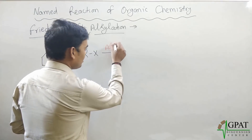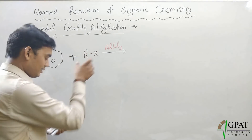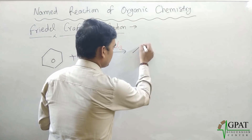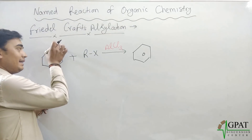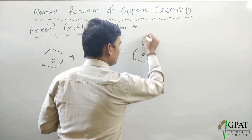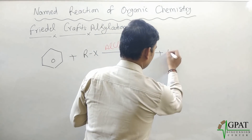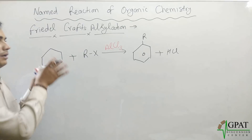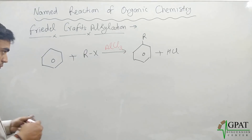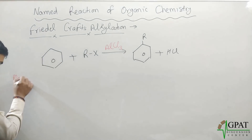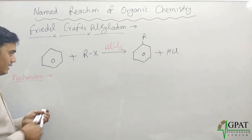I will use aluminium chloride (AlCl₃) as the Lewis acid. By this reaction, the benzene ring gets the alkyl group added onto it to form an alkylbenzene, and the byproduct will be HCl (hydrochloric acid). This is the basic concept behind Friedel-Crafts alkylation.